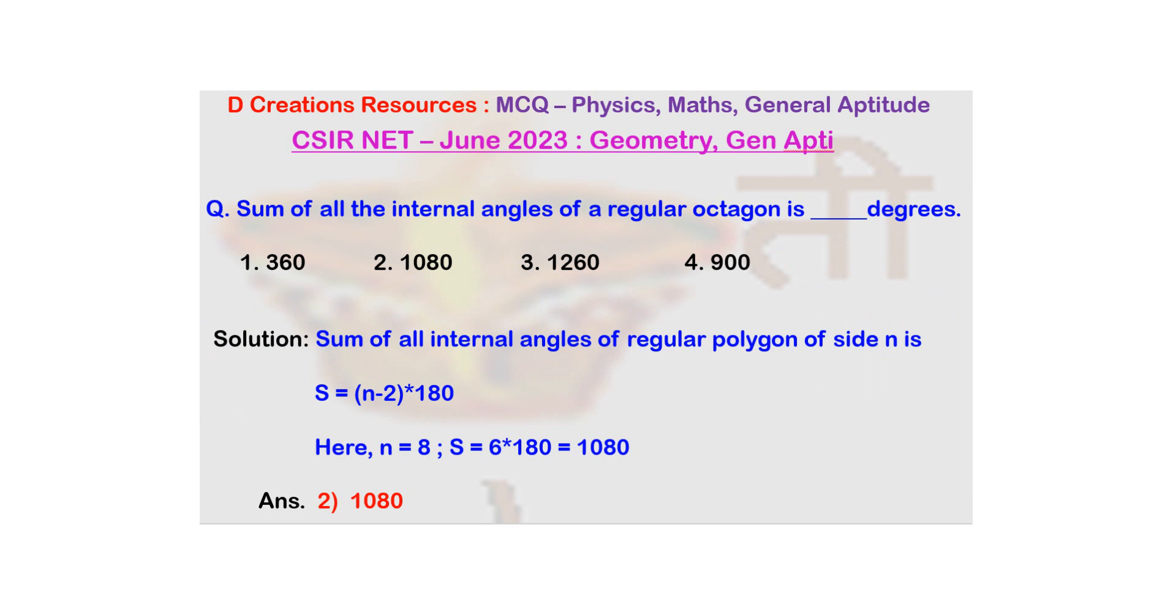So, there is a rule, basically. Of course, it's derived from maths, derived from logic. That the sum of all internal angles of a regular polygon of side N is N minus 2 into 180.